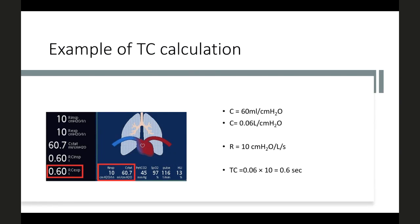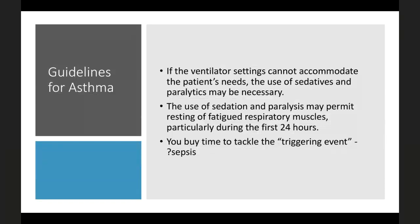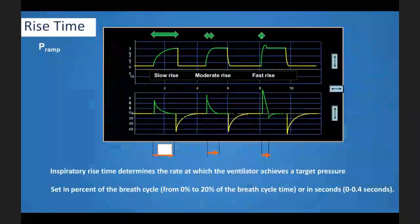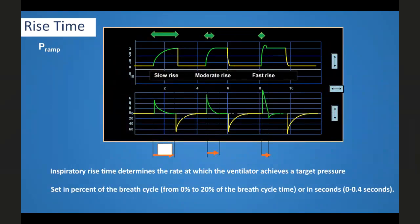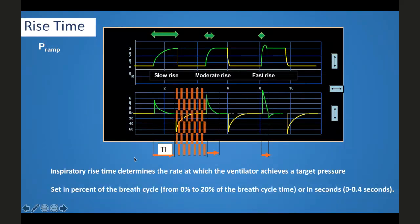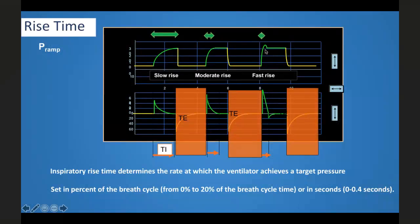Other guidelines for asthma: if ventilator settings cannot accommodate the patient's needs, sedatives and paralytics may be necessary — they permit resting of fatigued respiratory muscles during the initial hours, buying time to tackle the triggering event. Rise time (ramp): the inspiratory rise time determines the rate at which the ventilator achieves the target pressure. A slow rise takes more time to reach target pressure; a moderate rise takes about half that time; a fast rise achieves target pressure almost instantaneously. Rise time can be set as percentage of breath cycle time or in seconds.